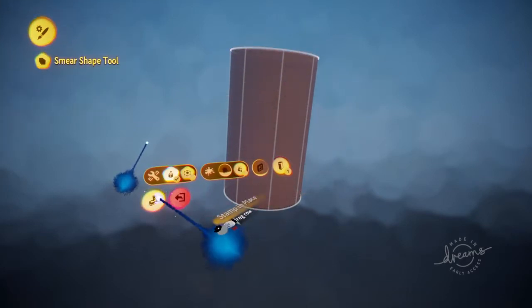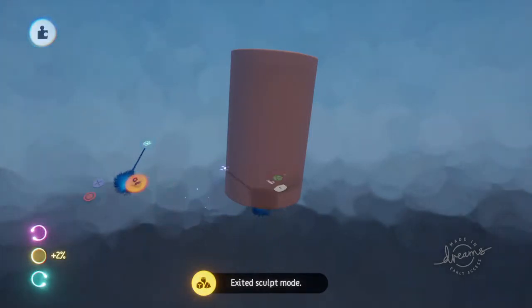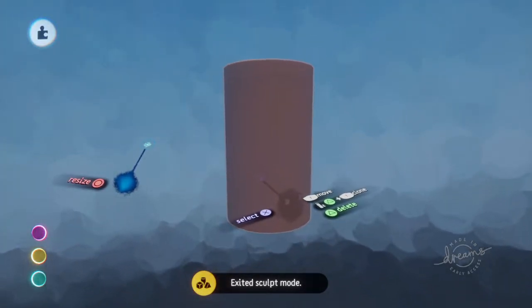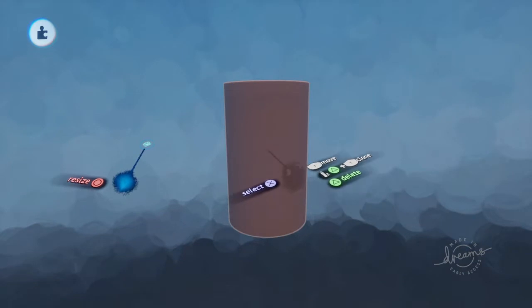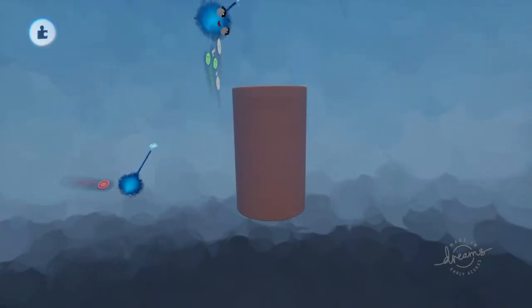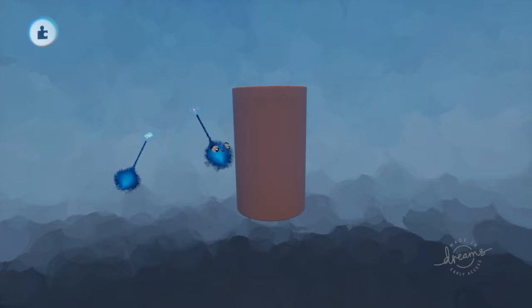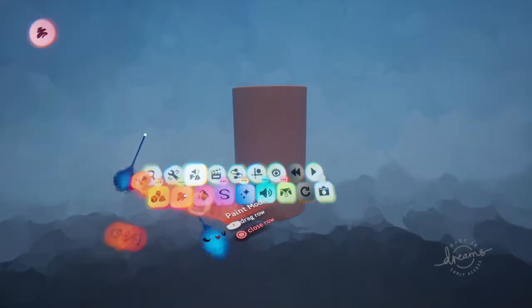Then we will go ahead and stamp that shape. We now have a cylinder and now we want to create some bark kind of texture. Using the paint tool, we're going to go into paint mode right here.